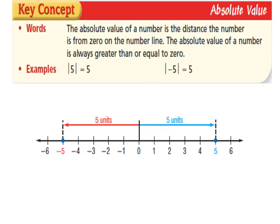Here comes our key concept: absolute value. The absolute value of a number is the distance the number is from zero on the number line. The absolute value of a number is always greater than or equal to zero. For example, the absolute value of 5 equals 5 because its distance from zero is 5. The absolute value of negative 5 is also equal to 5, because the distance negative 5 is from zero is 5 spaces. This concept can be hard, but just remember that distance is always positive.